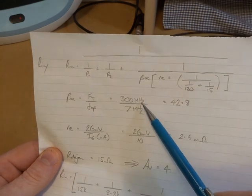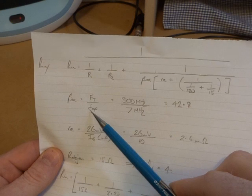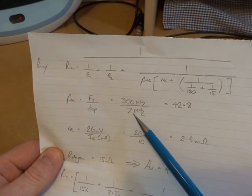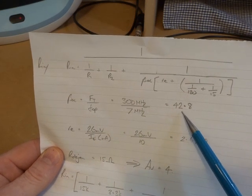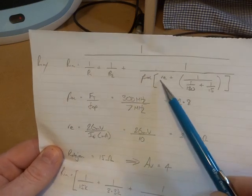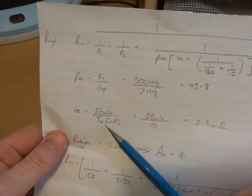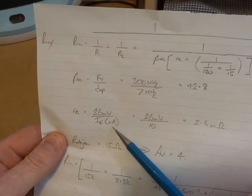So beta AC is our transition frequency for the transistor. So again, back to the spec sheet, that gives us a value of 300 megahertz. Divide that by our frequency of operation, 7 megahertz gives us 42.8. So that's what we'll use for that value right there. Another unknown is little RE. So little RE is 26 millivolts divided by our emitter current in milliamps.